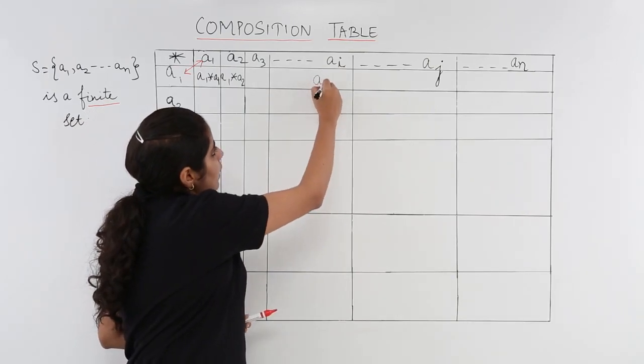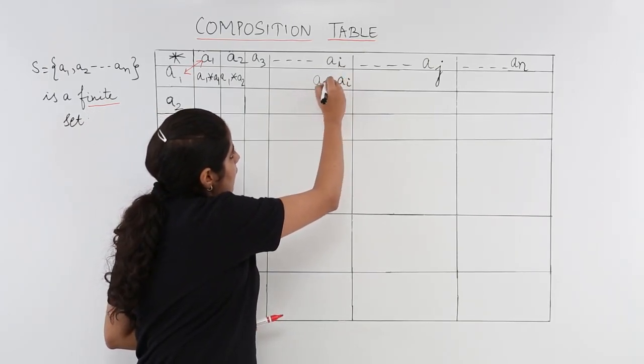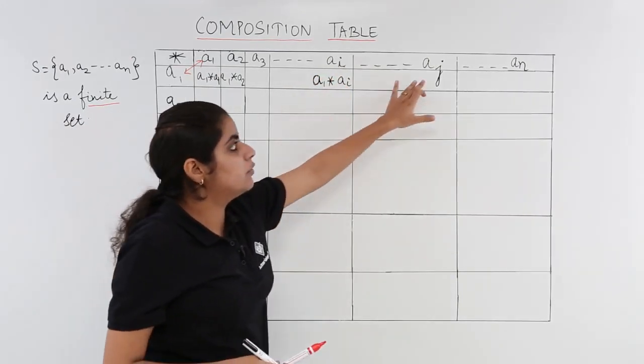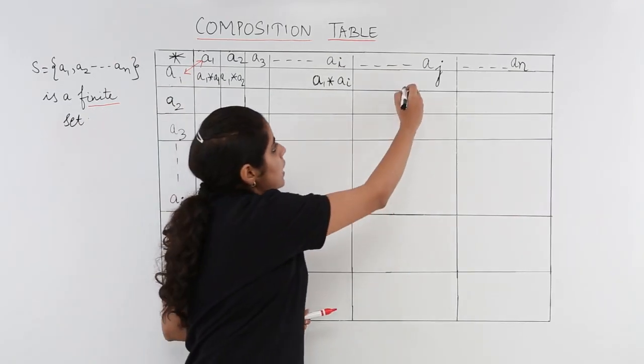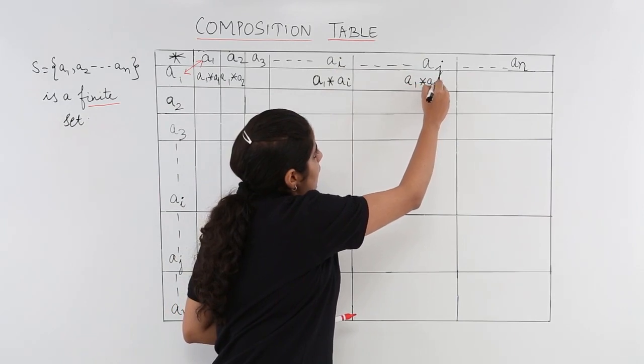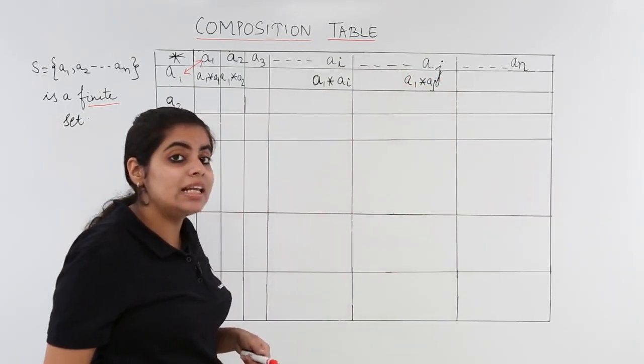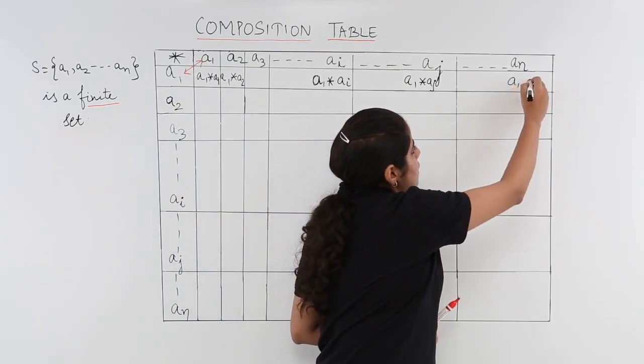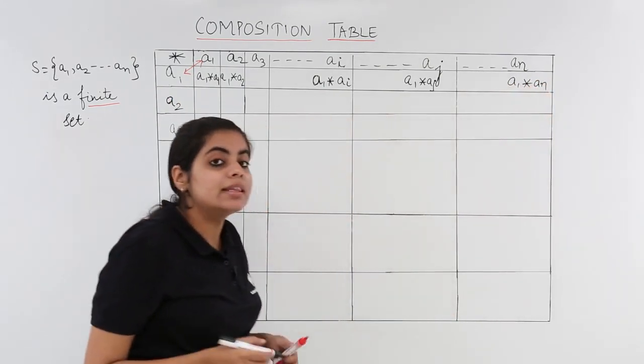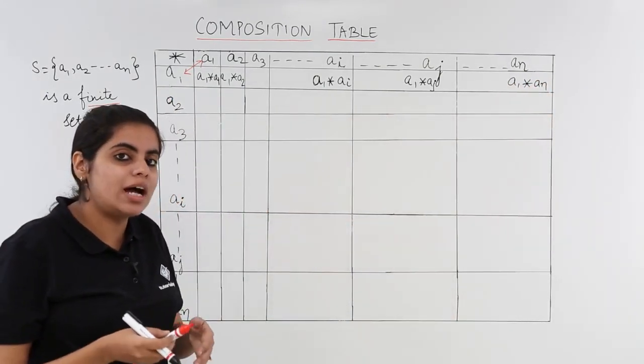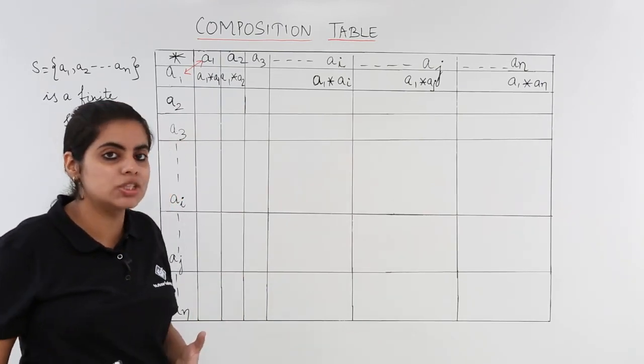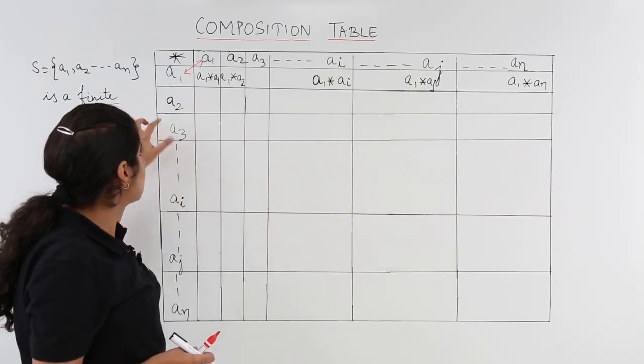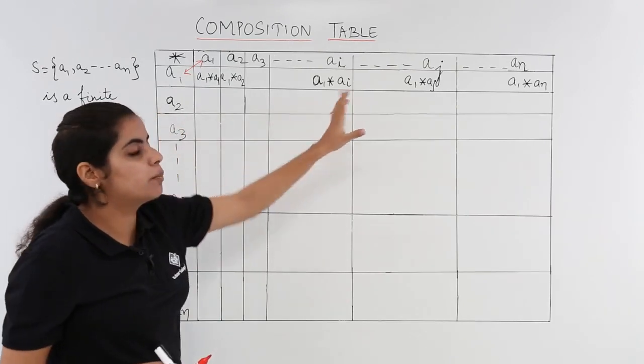And the story continues till a1 when treated with aj, so it becomes a1 star aj. And last but not least for the first row, we have a1 star an. That means we have to start filling the composition table or the operation table row by row.